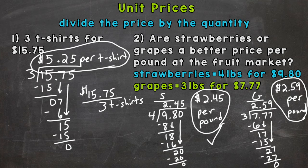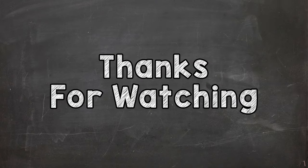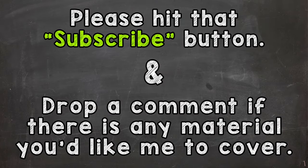So what is the better deal per pound? Well the strawberries. The strawberries are a little bit cheaper per pound. So there you have it, there's how you do unit prices: divide the price by the quantity. Hopefully that helped. Thanks so much for watching. Until next time, peace.